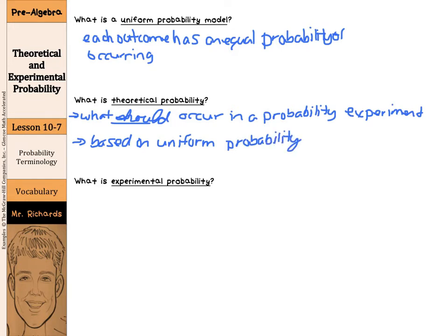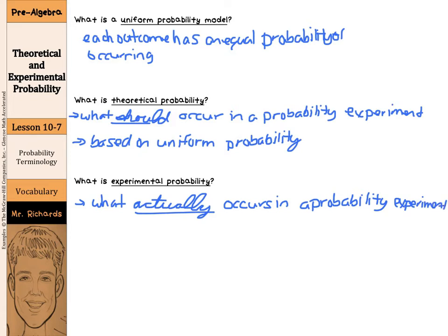Experimental probability is what actually occurs in a probability experiment. If you flip a coin 10 times, you may get heads 6 out of the 10 times, or even 7 out of the 10 times and tails the other 3 or 4. It's what actually happens, and this is based on what's called relative frequency.